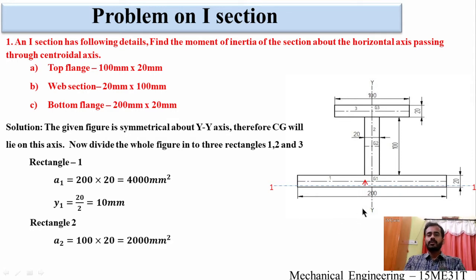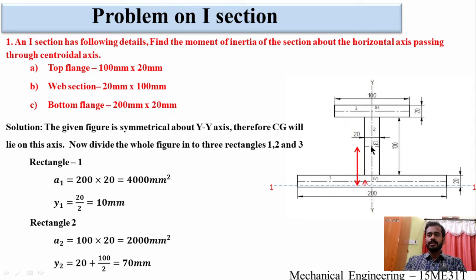Consider rectangle 2 and calculate the area: A2 = 100 × 20 = 2000 mm². Now calculate distance y2, which is the distance from reference axis 1-1 to the center of gravity of the second rectangle, G2. y2 = 20 + 100 ÷ 2 = 70 millimeters.